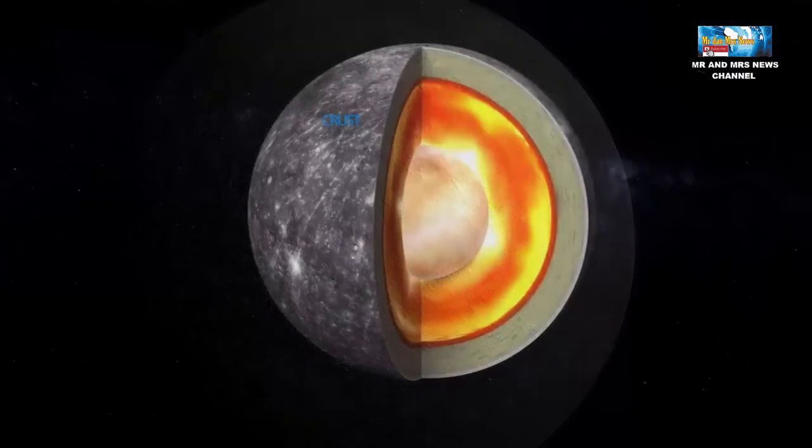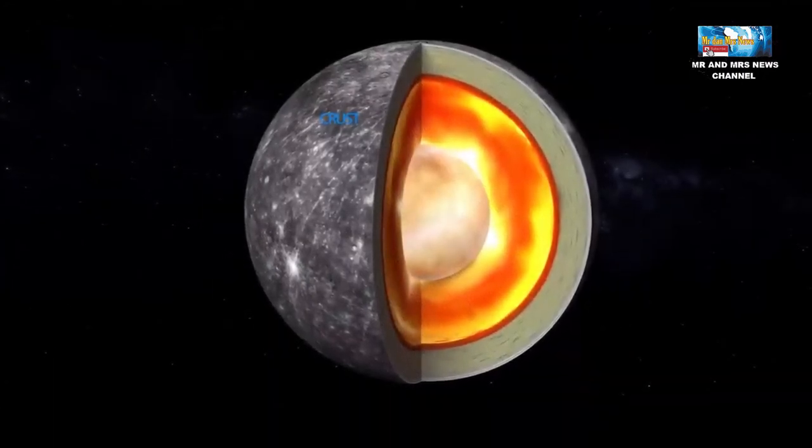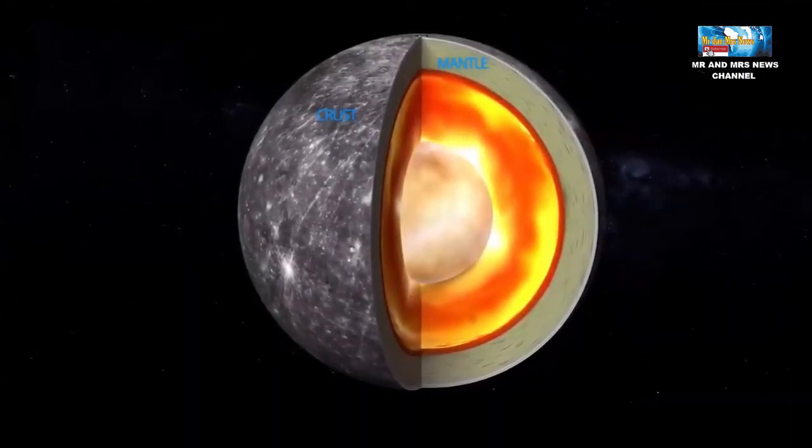Seperti planet terestrial lainnya, Merkurius memiliki inti pusat, mantel berbatu, dan kerak padat.